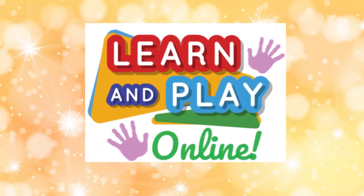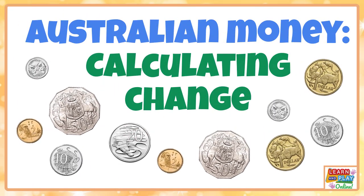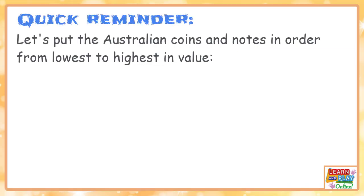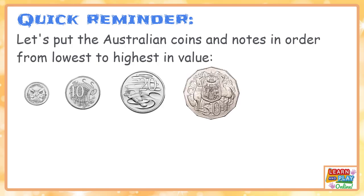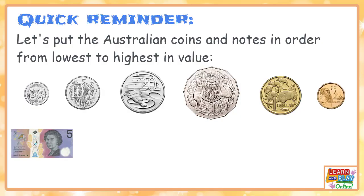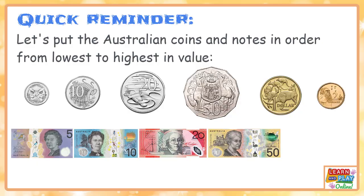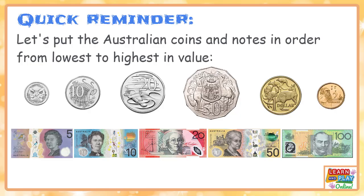Learn and play online — Australian money: calculating change. Before we start, let's have a quick reminder. Let's put the Australian coins and notes in order from lowest to highest in value: 5 cents, 10 cents, 20 cents, 50 cents, one dollar, two dollars, five dollars, ten dollars, twenty dollars, fifty dollars, one hundred dollars.